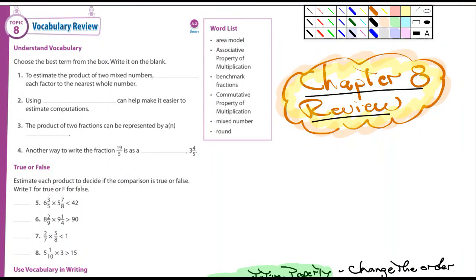Okay fifth graders, this is Chapter 8 review and we're starting with the vocabulary review. This is page 370. We've done this seven times before, so there's not a whole lot I can say. Use the word list right here or the word bank if you want to look at it.